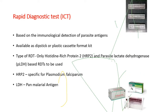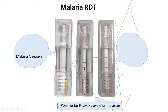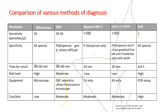Rapid diagnostic tests based on the ICT method: there are two types of RDTs available — LDH as pan-malarial antigen, and histidine-enriched protein 2 (HRP2), which is specific for Plasmodium falciparum. The control line must be seen for the test to be valid, and appropriate buffer from the kit must be used. No saline or distilled water should be used. Microscopy requires minimum 50 parasites per microlitre, QBC requires 30-50, ICT requires more than 100, while PCR requires as low as 5 parasites per microlitre.